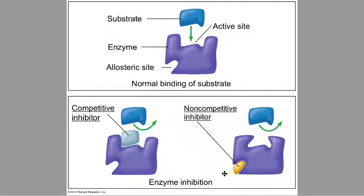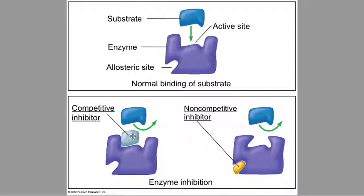A non-competitive inhibitor I think of like the nagging mother-in-law. The nagging mother-in-law changes the shape of the enzyme — let's say the substrate — and causes it to not be able to react as it should. It binds somewhere other than the active site, changes the shape of the enzyme, and then the substrate cannot bind like it should — see how it kind of folded in on its side. We call that a conformational change with the non-competitive inhibitor.